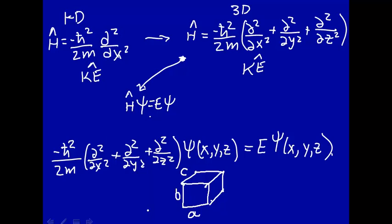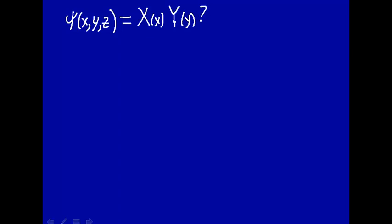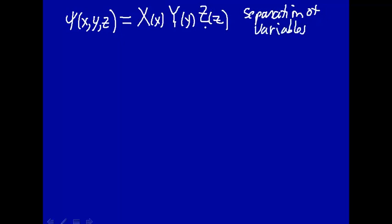We're going to assume that the dimensions x, y, and z are independent of one another — there's no preferential direction for the particle to travel. If x doesn't depend on y or z, then we can use a technique called separation of variables, where the wave function of x, y, z can be separated into a product: a wave function depending only on x, one only on y, and one only on z.